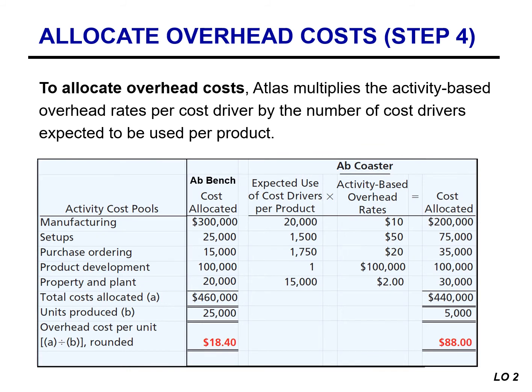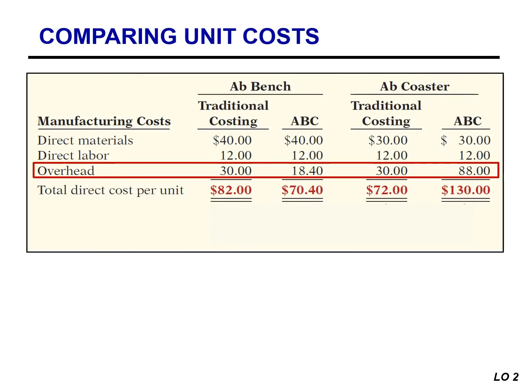For the ABB Coaster, we take the expected use of cost drivers per product and multiply by the activity-based overhead rates. Adding up all the overhead costs allocated to the ABB Coaster totals $440,000. We expect to produce 5,000 units, so the overhead cost per unit is $88. Under ABC, the overhead cost per unit is $18.40 for the ABB Bench and $88 for the ABB Coaster.